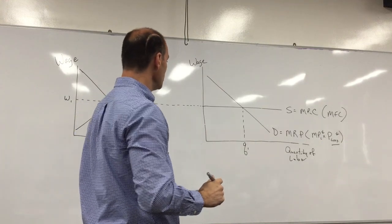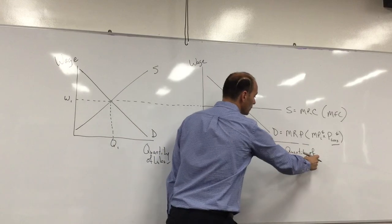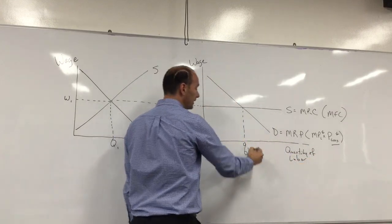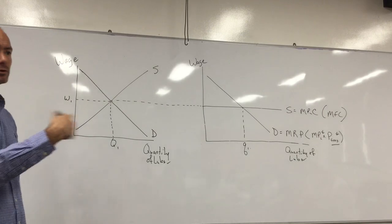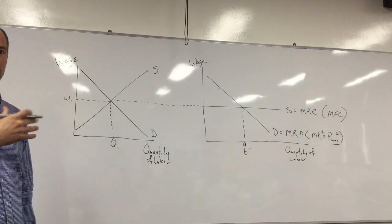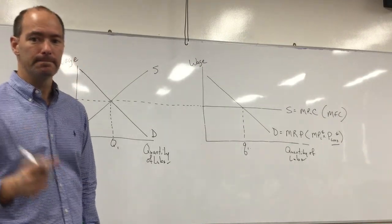And then again, the wage on the vertical, labor on the horizontal, and that's the equilibrium quantity for the firm. So that's a perfectly competitive labor market. Make sure you're able to understand and do that on a test. That's it, thanks.